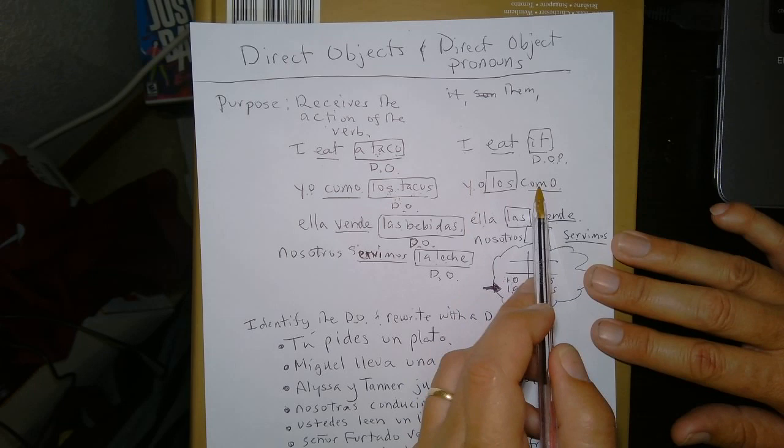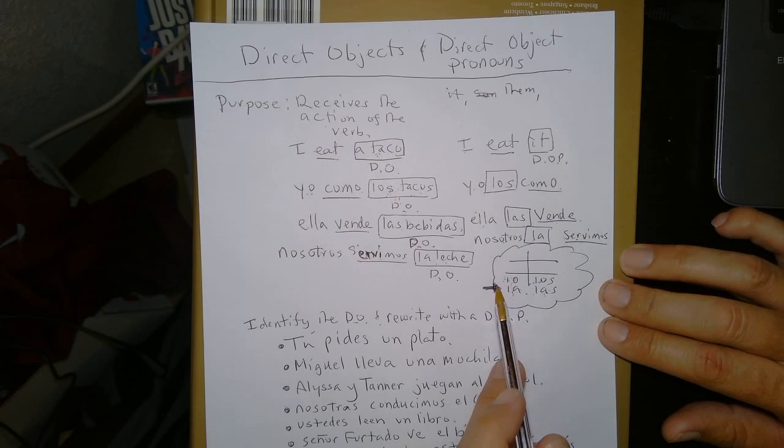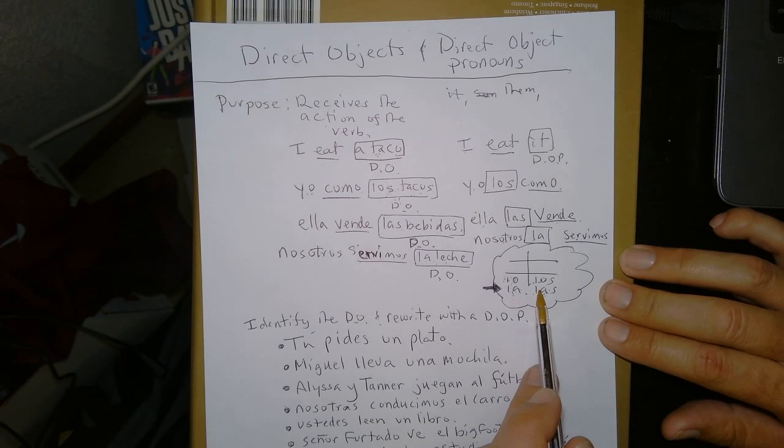Yo como. Yo como. I eat. Now, there's two things that are different about direct object and direct object pronouns that we want to discuss right now. One is something you pretty much already know. We know that in Spanish we have to make things agree. So, down here in the third person.